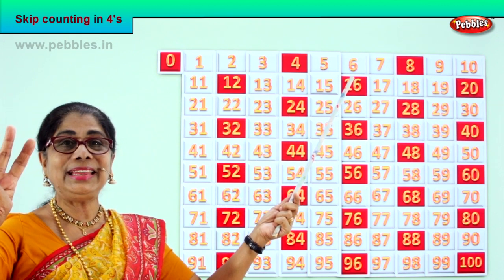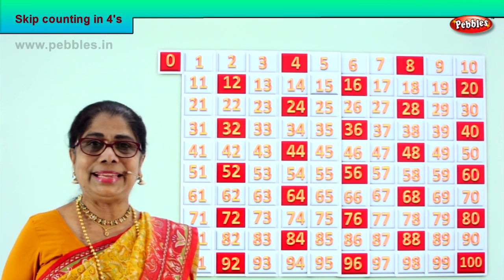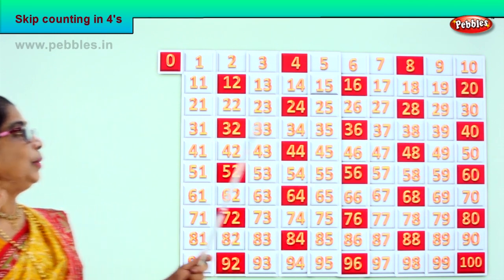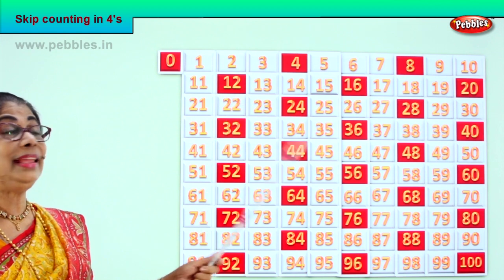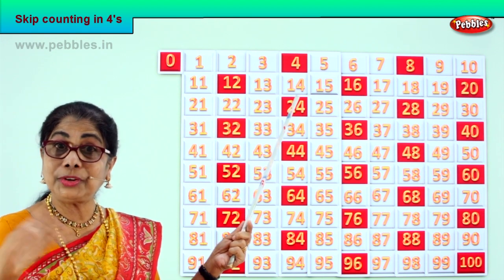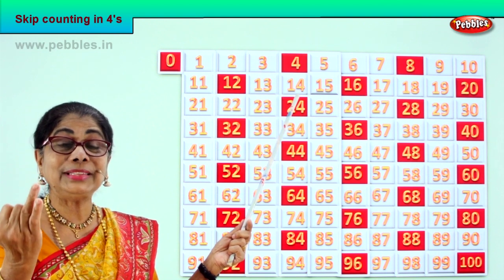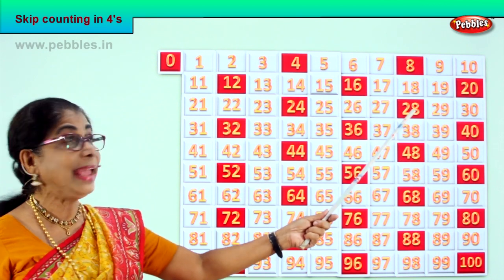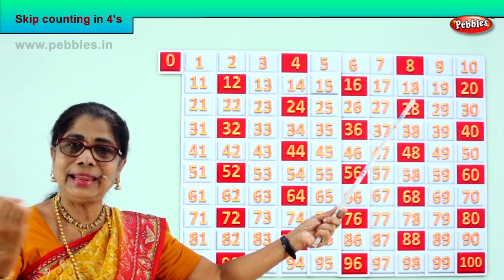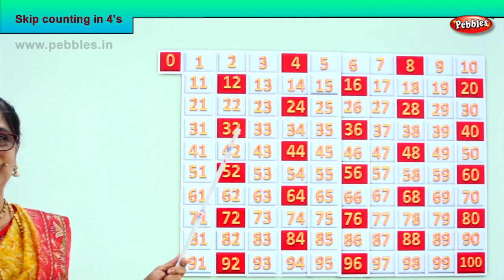After 16: 17, 18, 19, 20. After 20: 21, 22, 23, 24. After 24: 25, 26, 27, 28. After 28: 29, 30, 31, 32.